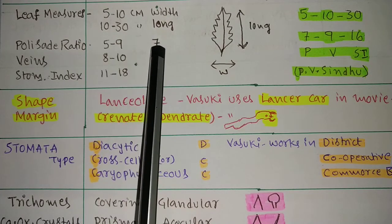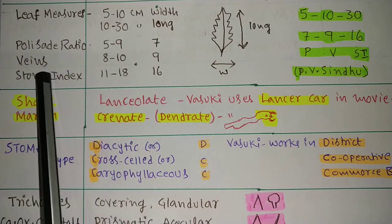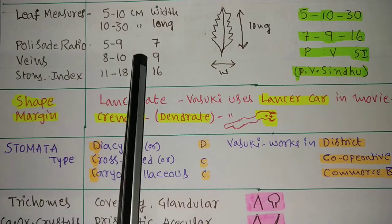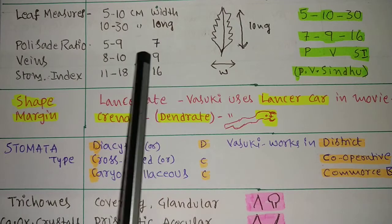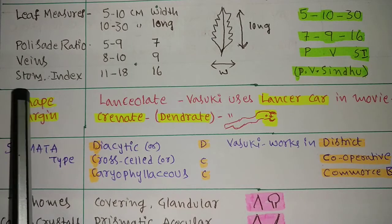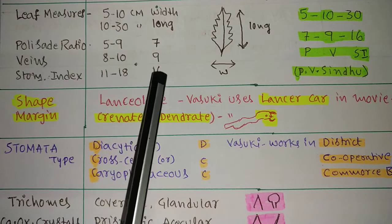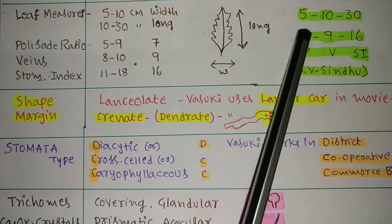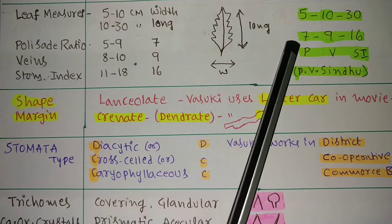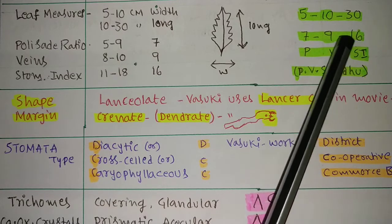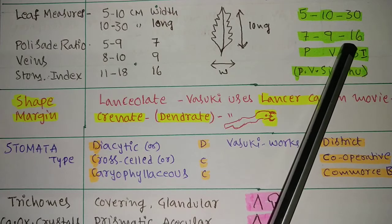Next, palisade ratio: 5 to 9. Instead of remembering two numbers 5 and 9, I made it 7, the center number. Vein islet numbers: 8 to 10, I take center number 9. So you remember this: 7, 9.